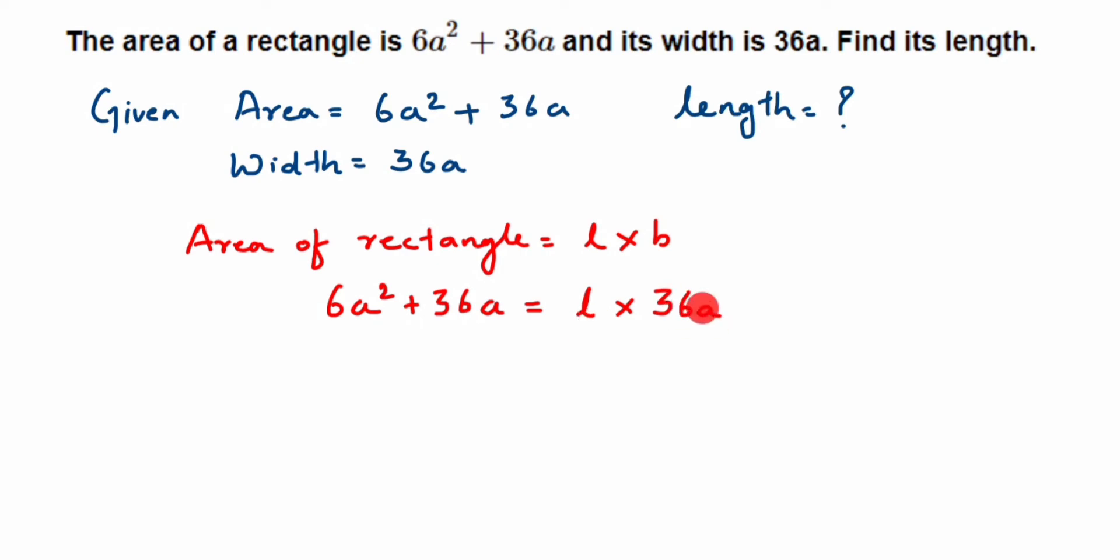Now since I want only L value, I don't want this 36a over here. I'm going to transpose this to the other side. It's in multiplication, so when you take this to the other side it comes in division. So from here we can write down (6a² + 36a) / 36a = L.